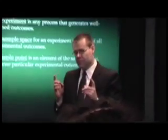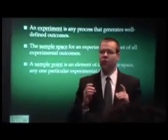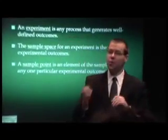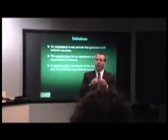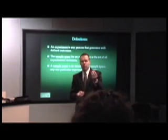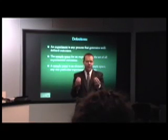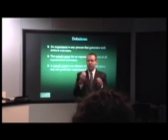So the sample space consists of 48 sample points. One sample point, for instance, is getting a one and a one on the different dice. Another sample point is getting a two on the six-sided and a five on the eight-sided.